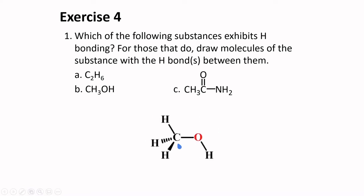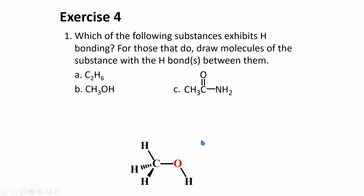Letter B is methanol. Here a hydrogen is bonded to the oxygen, so hydrogen bonding is possible in this substance. In the presence of another molecule of methanol, the oxygen and hydrogen in one molecule and the oxygen in another molecule can form hydrogen bonding.